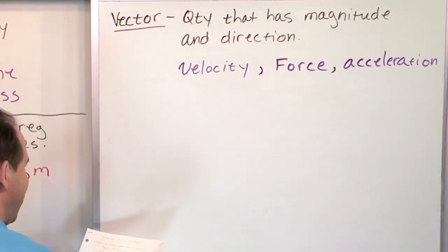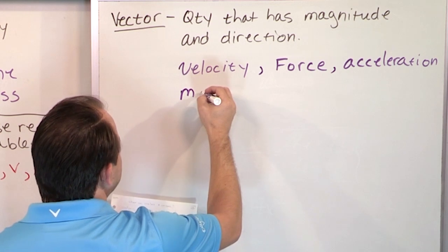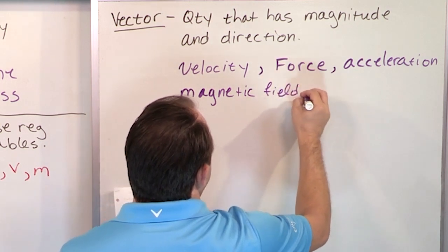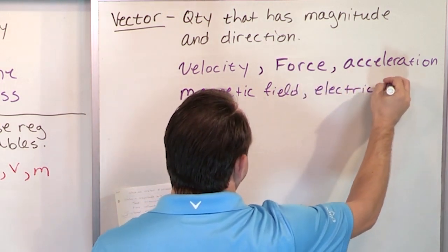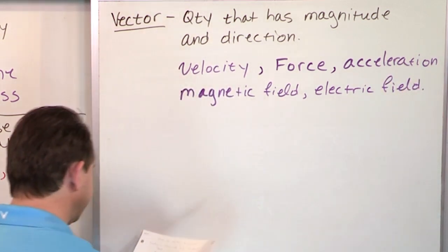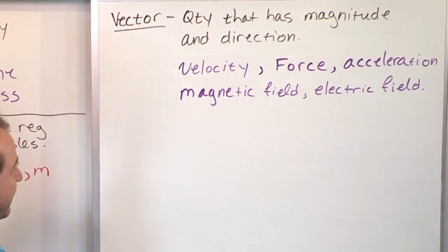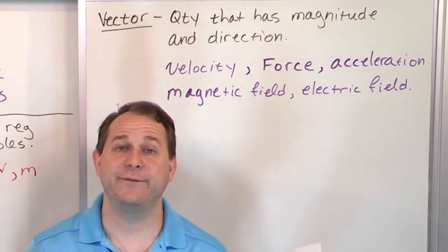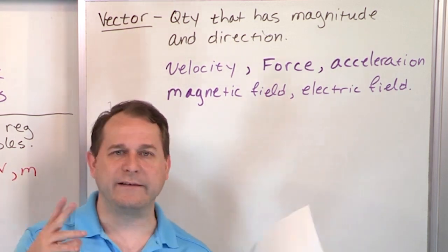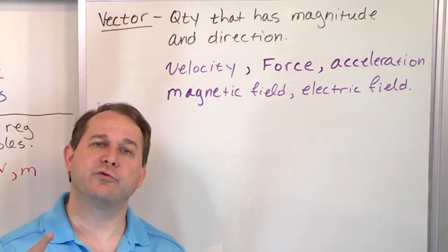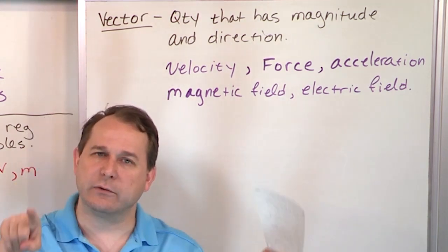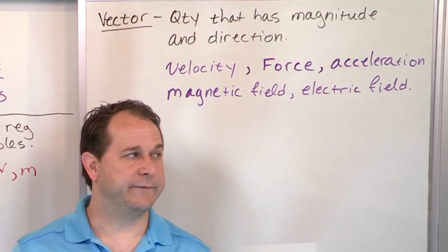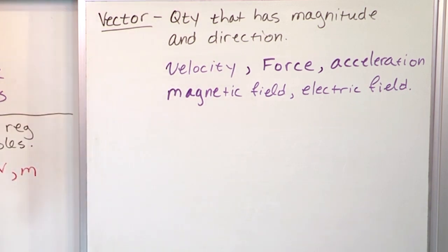We're going to get to these much later, but just to give a flavor: magnetic field and electric field. You've all seen magnets interact with each other — there's an invisible field we call a magnetic field, and that field is a vector field. Every point in space around the magnet has both a strength and a direction. Those are the field lines that we know are there. So this is the difference between scalar and vector.